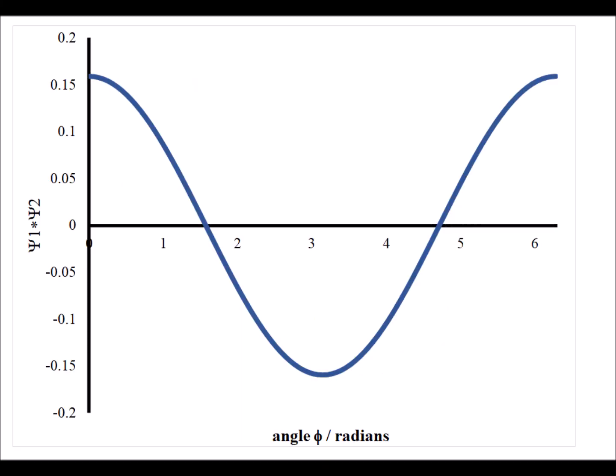Here is the product when m sub l is equal to 0 and m sub l is equal to 1. Notice that if we shade the area above the x-axis as a dark gray and the area below as light gray, we notice that it's pretty easy to see that the areas of each of these regions is exactly equal. Since we count the area underneath the x-axis as a negative area, the sum total here is going to be equal to 0, which is the definition of orthogonality.